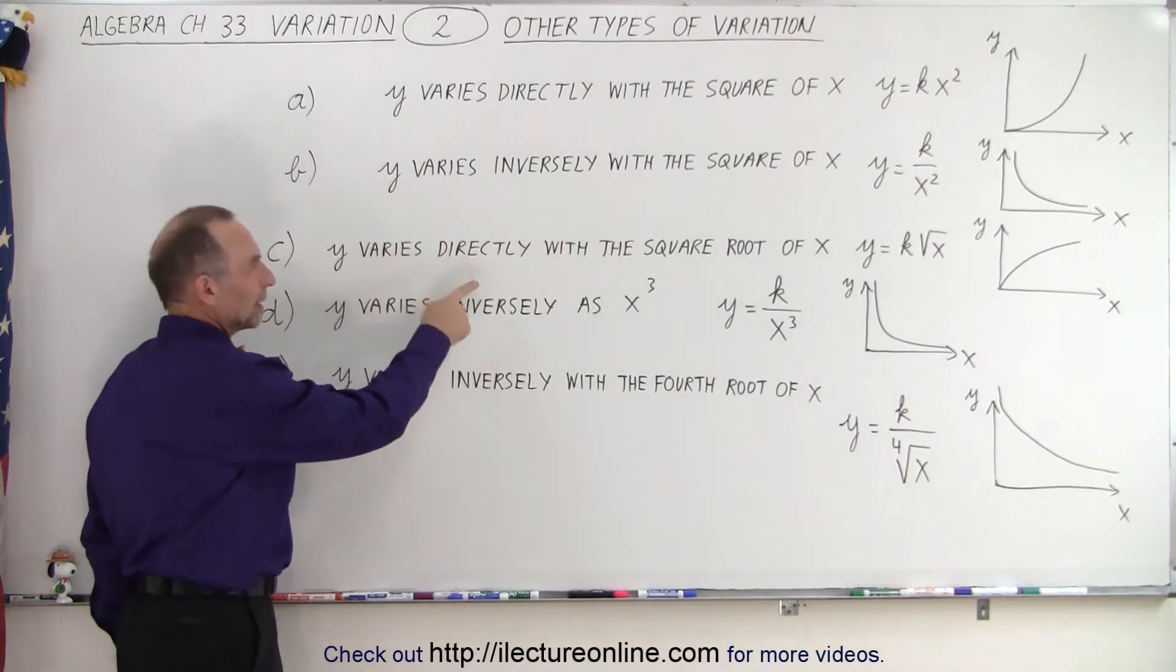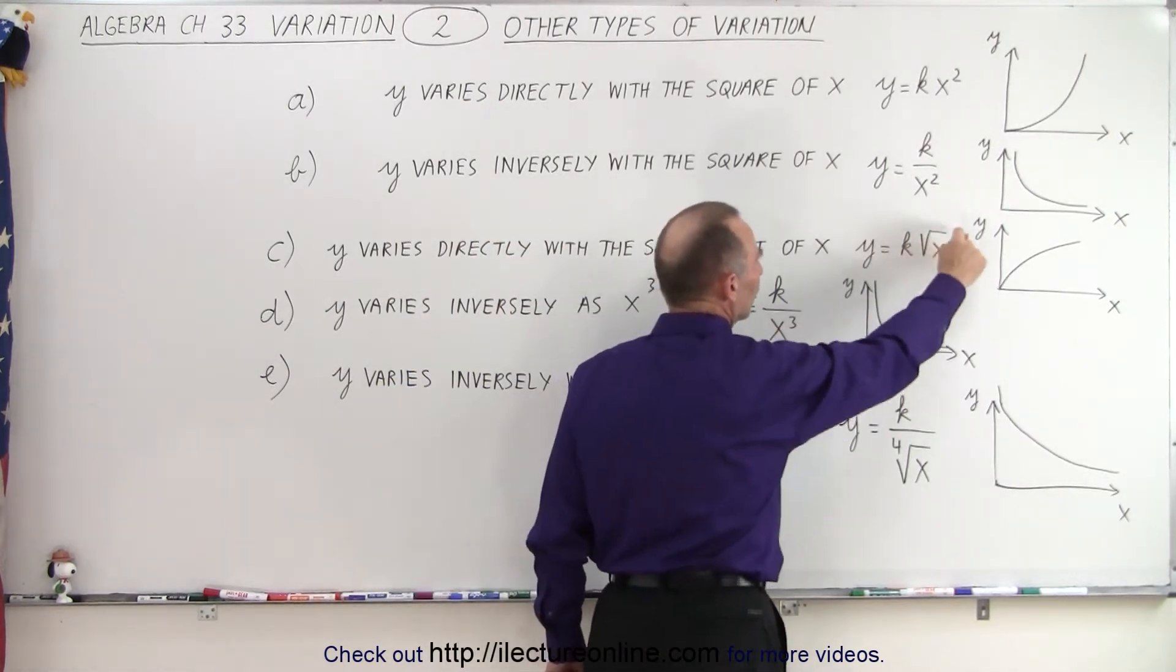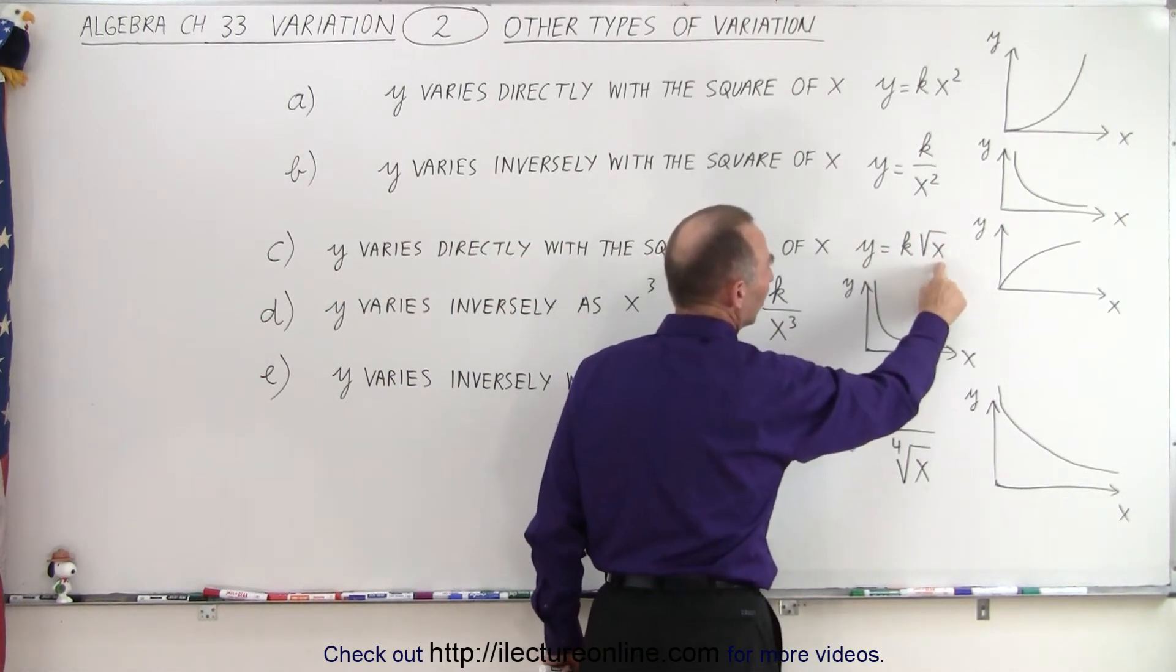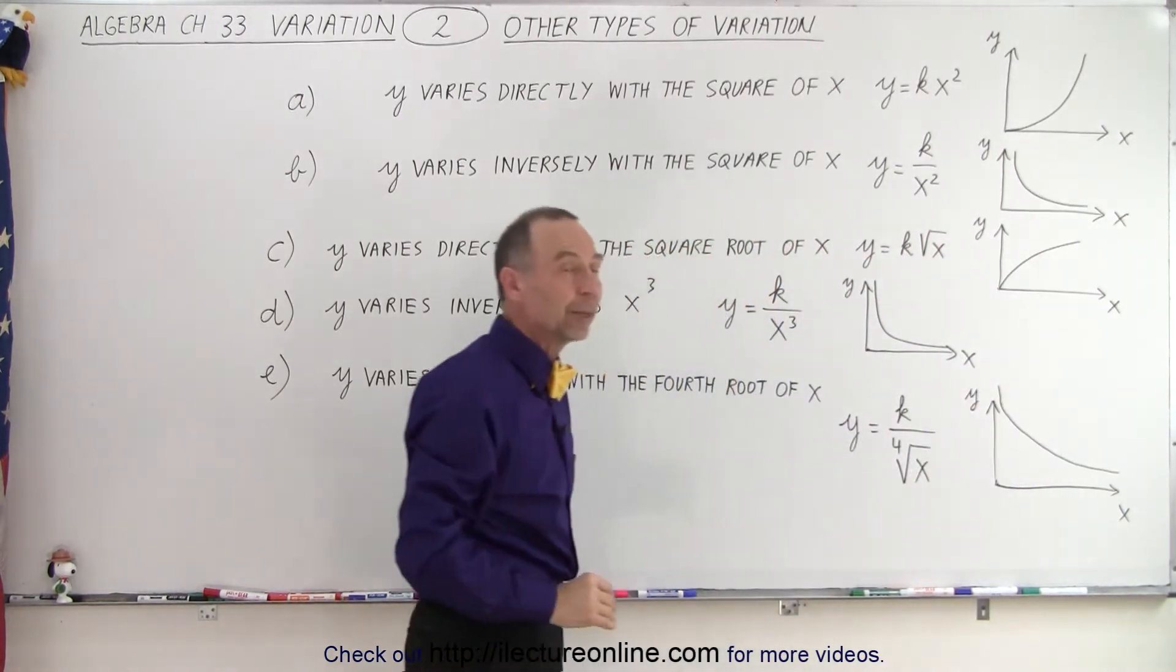Y varies directly with the square root of X. So here directly means it's in the numerator, but it's the square root of X. So as X gets bigger, Y will get bigger as well. But since we're taking the square root, the change in Y will not be as big.